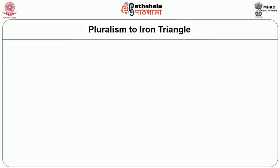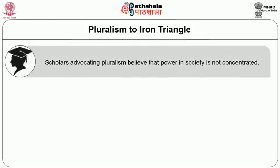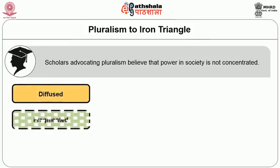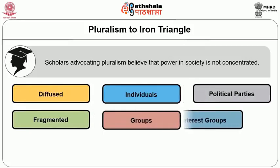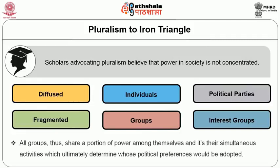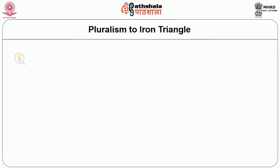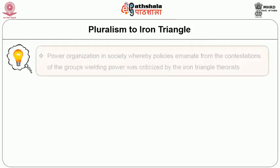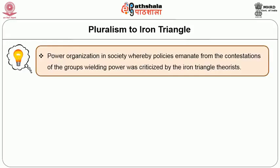Firstly, from pluralism to iron triangle. Scholars advocating pluralism believe that power in society is not concentrated. In fact, it is diffused and fragmented among individuals and groups like political parties and interest groups, and there is an equal balance of power between interest groups. All groups thus share a portion of power among themselves and their simultaneous activities ultimately determine whose political preferences would be adopted. This optimistic idea of pluralism regarding power organization in society, whereby policies emanate from the contestations of groups wielding power, was criticized by the iron triangle theorists.